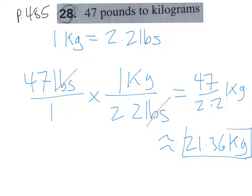So this is how we do regular conversions outside the metric system. Start with your conversion rate, then start with what you have — put it over 1. Use your conversion rate as a fraction, and whatever units you started with, those go on the bottom so they cross-cancel. Multiply straight across on top, straight across on bottom, divide, and you get your answer.